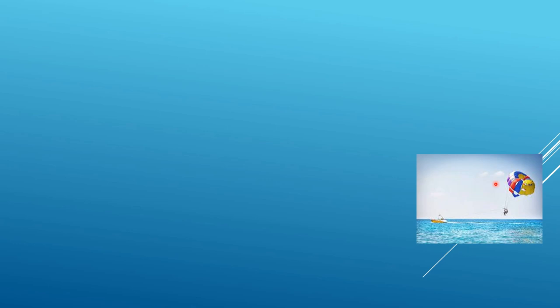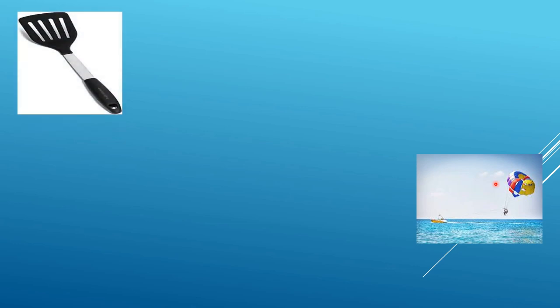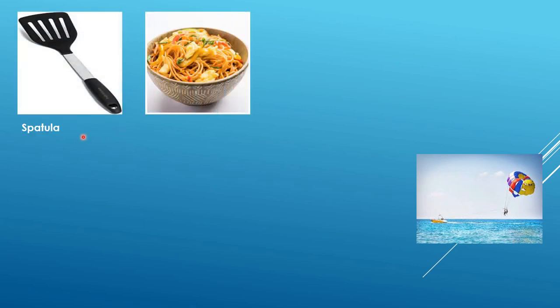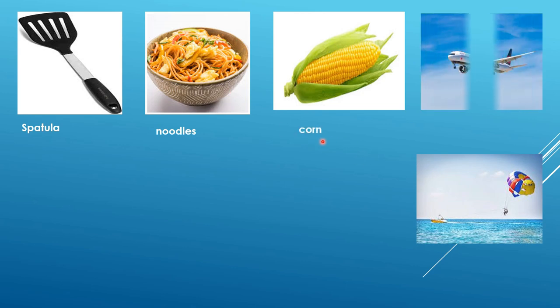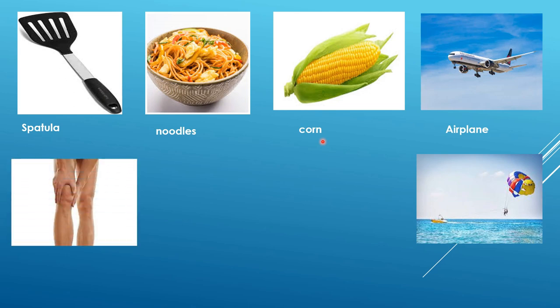The next image — I will tell you the name at the end of the video so you can think about it. That is spatula — s-p-a-t-u-l-a. Next is noodles — n-o-o-d-l-e-s. Then corn — c-o-r-n. And next is airplane — a-i-r-p-l-a-n-e. We normally say aeroplane, but in this context it is airplane.